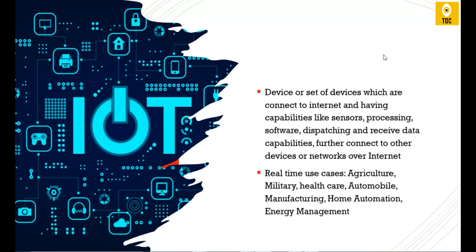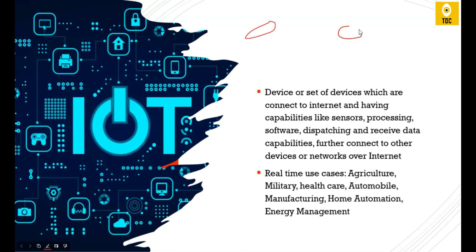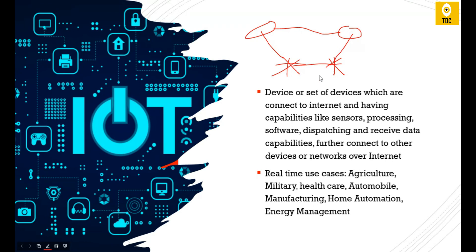IoT devices connect to other devices or networks over the internet. There will be different devices, each connected to each other — device to device, or device to network. There might also be multiple networks communicating internally. Sensors, software, and processing happen within these devices, and based on all this processing, data is sent to different networks or devices.